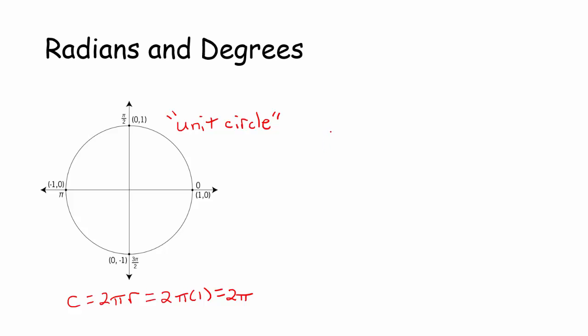So basically here, we're going to have this conversion factor that 360 degrees, which is the degree measurement for all the way around the circle, we're going to say that is the same angular measurement as 2π radians. And we're doing that because 2π is the circumference of the unit circle, and the unit circle is going to be very fundamental to our study of trigonometry.